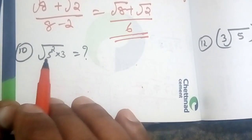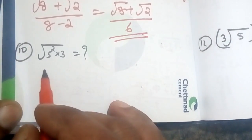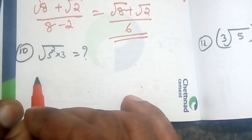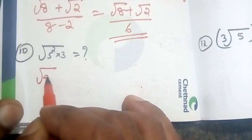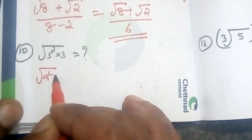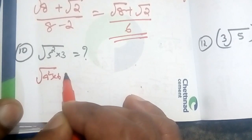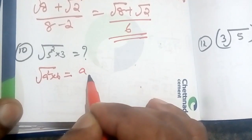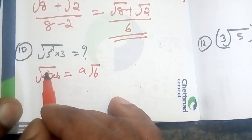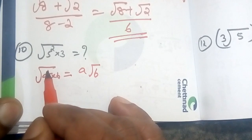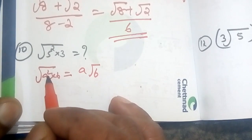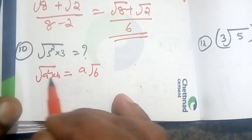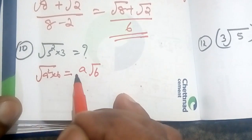Now, let's take a look at root a square into b. If a square is root a into root a, so let's take a look at root a.